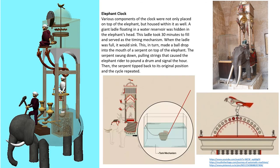In medieval times, the Arabian world invented the elephant clock, and Europe developed the rolling ball clock. These two were little masterpieces of mechanical engineering.